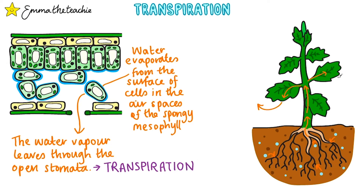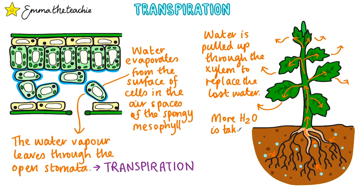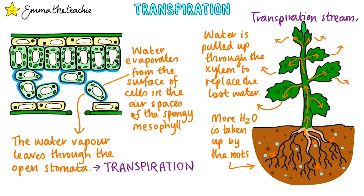The orange arrows show the path of water through the plant. Water is pulled up through the xylem, through the stem and the leaves, to replace the lost water. So more water will need to be taken up by the roots through the process of osmosis. This movement of water through the whole plant is referred to as the transpiration stream.